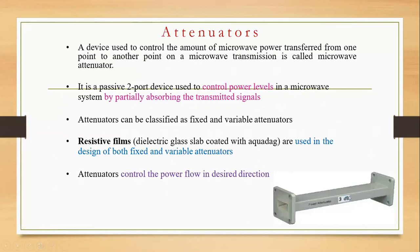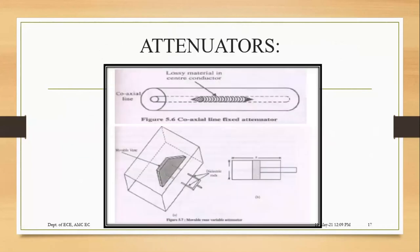It is a passive two-port device mainly used to control power levels in a microwave system. It will absorb the transmitted signal. The classification is fixed, variable, and attenuators. The first figure shows how the practical design looks externally. The internal diagram corresponds to the first one — that is figure 5.6 — labeled as coaxial line fixed attenuator.